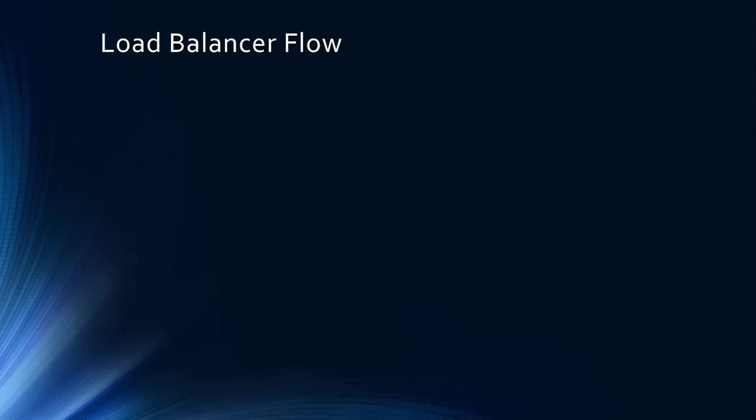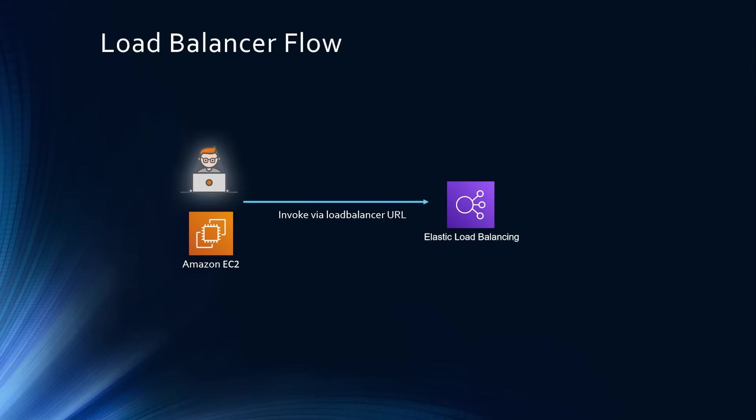Let's first look at the load balancer flow. In this case, either a user or another application is invoking the load balancer using the default load balancer URL provided. The load balancer accepts traffic on HTTP protocol port 80, and then redirects the traffic back to the application — let's say your application is running on Kubernetes.